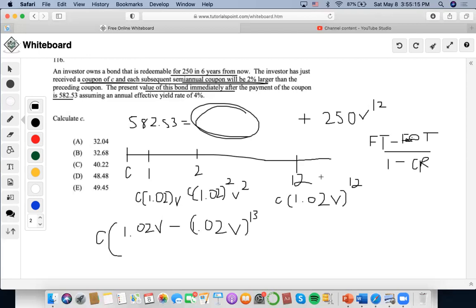And then the first omitted term is 1.02 V to the 13th, because it would continue on and it would become this, and then 1 minus the common ratio, which would be 1.02 V.